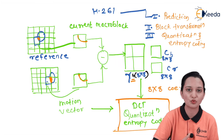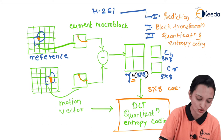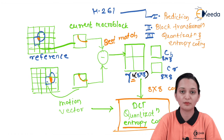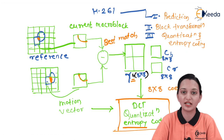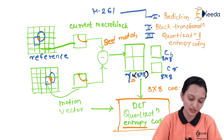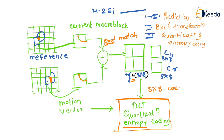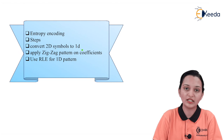Prediction means finding the best match between the current macroblock and a reference — the best match that provides a good entropy value and final answer. The purpose of entropy calculation is to calculate efficiency, since entropy H, average code length L, and efficiency E are related. To achieve maximum efficiency, input must pass through prediction and block transformation. Step one is prediction, step two is block transformation, and step three is quantization and entropy encoding, which we now explain in detail.